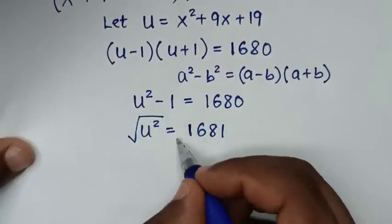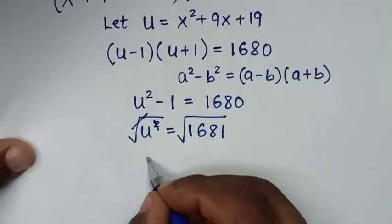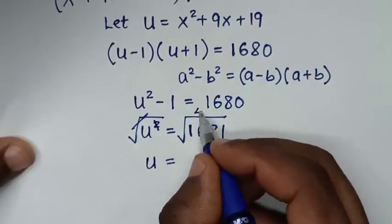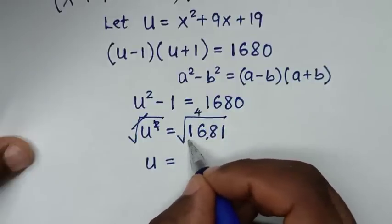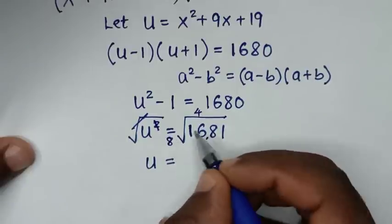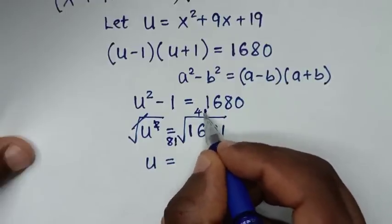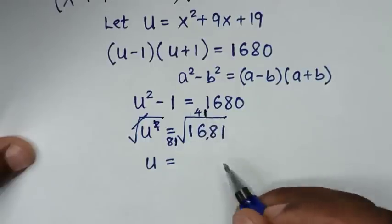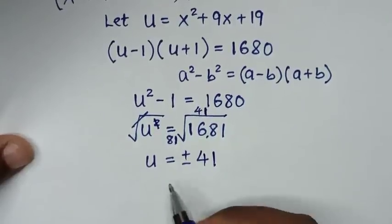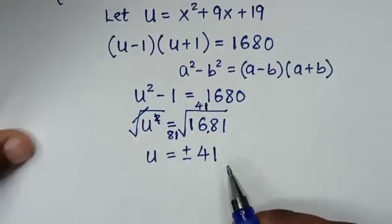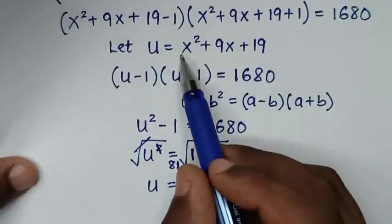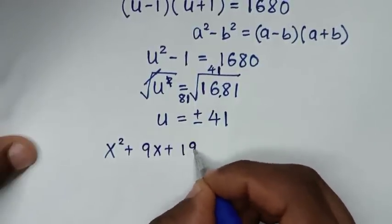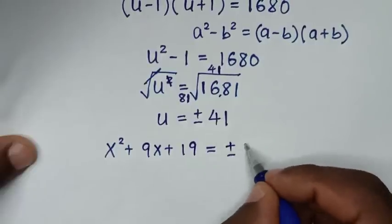To find the value of u, we apply square root to both sides. The square root cancels the square, giving u = ±√1681. Breaking down 1681: √16 is 4 and √81 is 9, giving us √1681 = 41. So u = ±41. Recalling that u = x² + 9x + 19, we have x² + 9x + 19 = ±41, giving two equations.